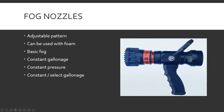Fog nozzles create your straight stream and fog stream. They come with adjustable patterns and can be used with foam. There are a few different versions of basic fog nozzles: the adjustable pattern nozzle, in which the rated discharge is delivered at a set pressure and nozzle setting — that's the one where it says run at 95 PSI at the nozzle.